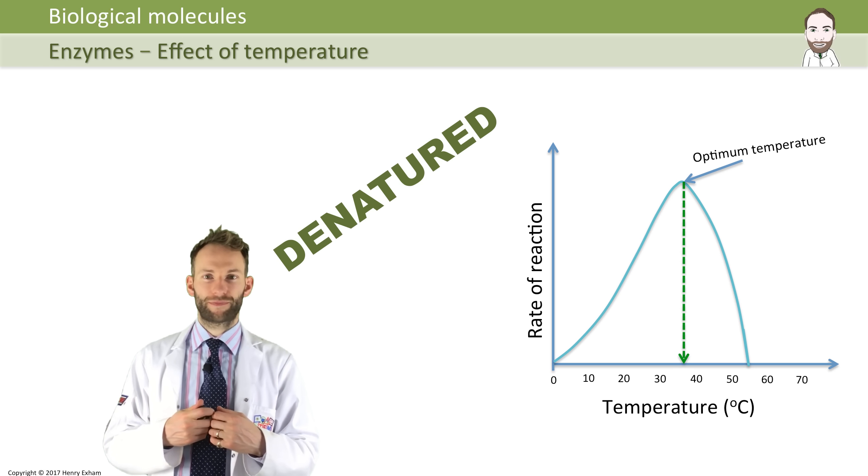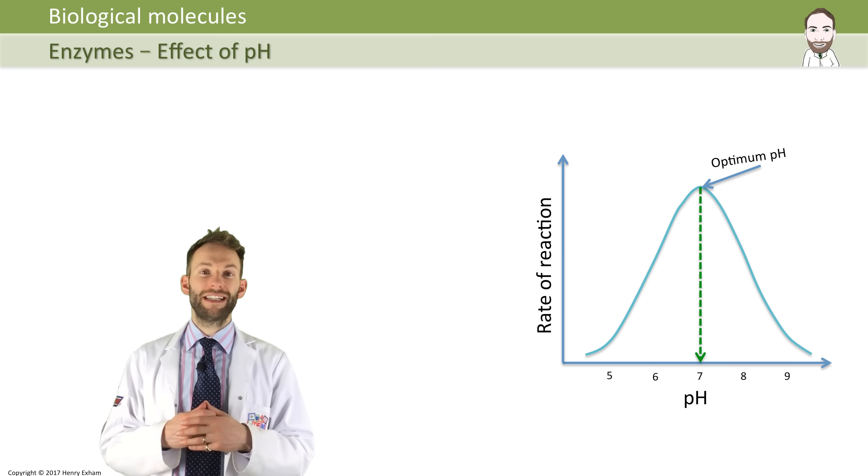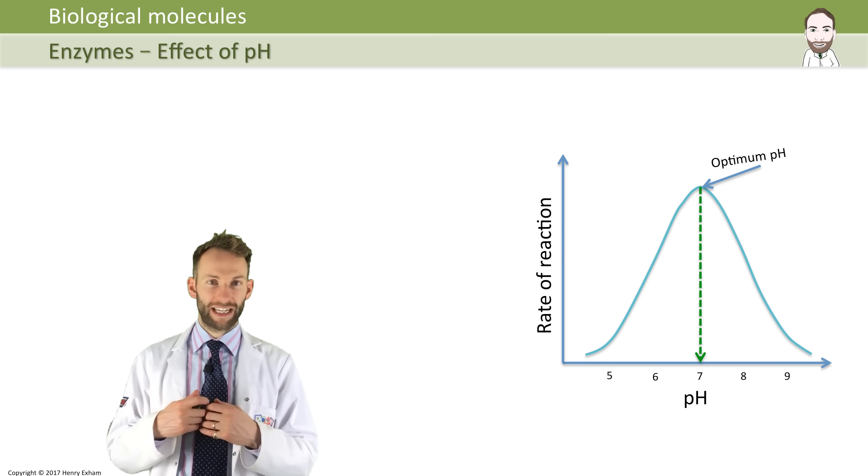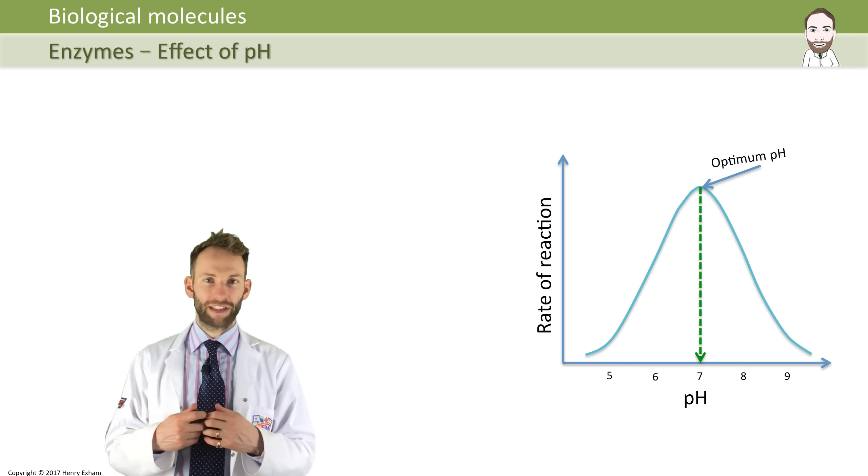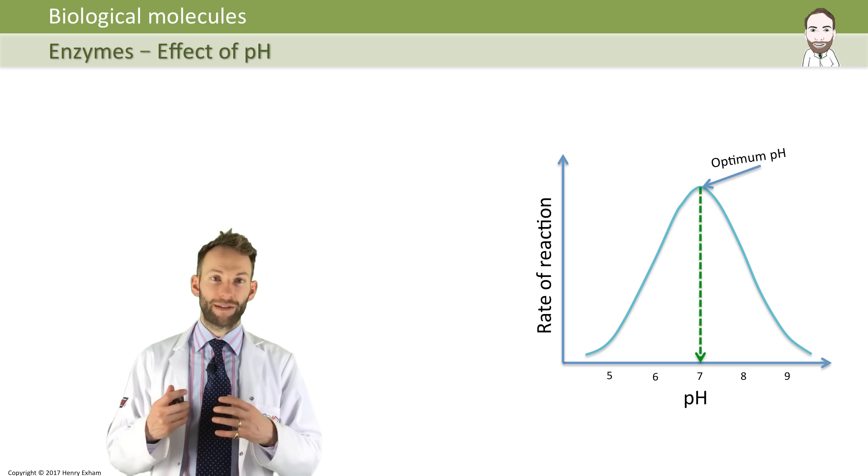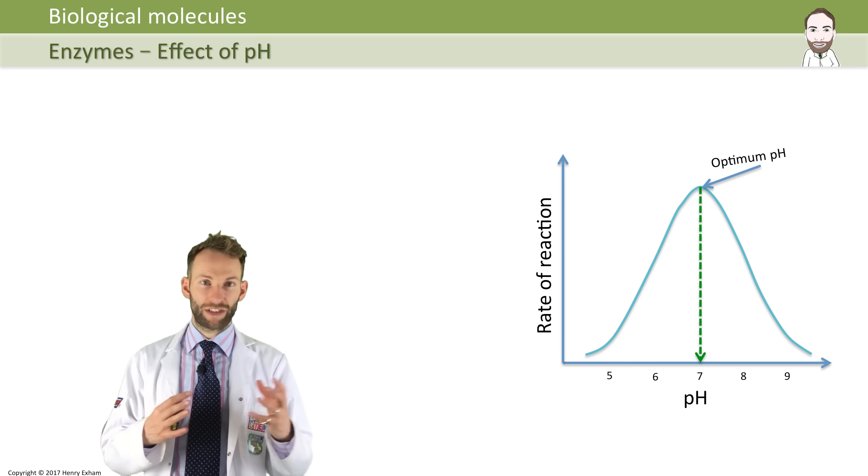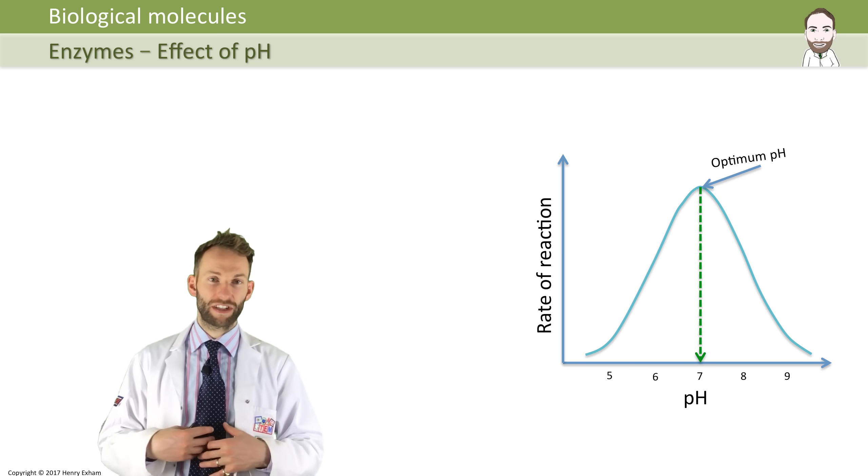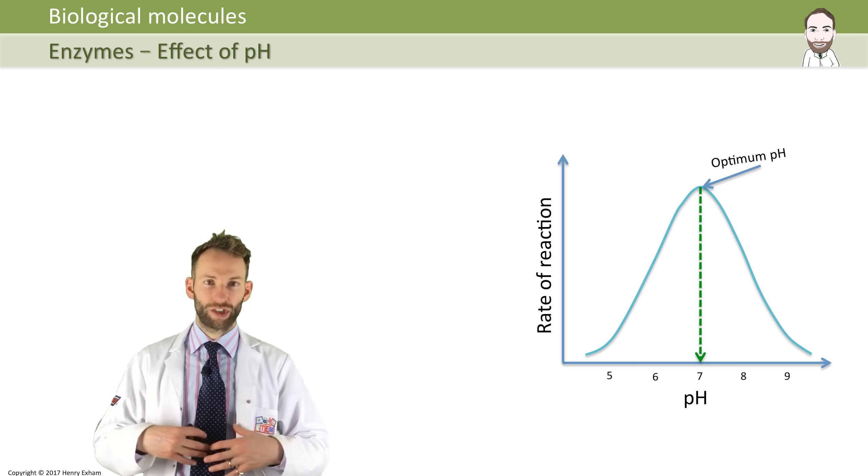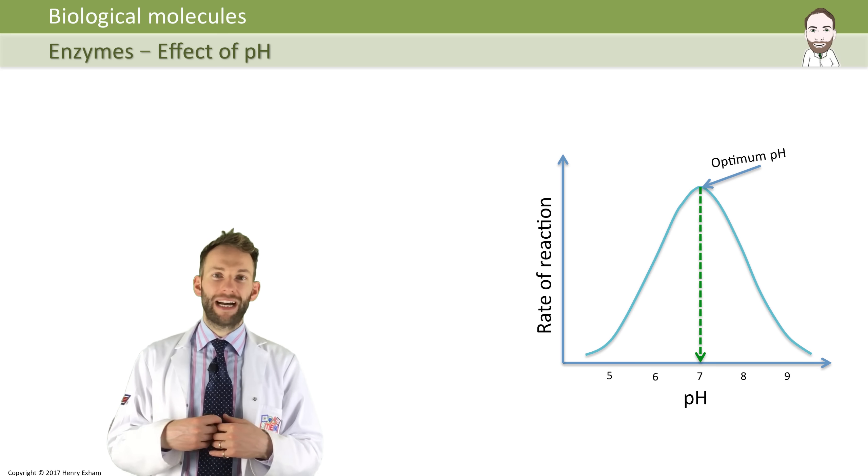The effect of pH is sort of similar. Again, there is an optimum pH at which most enzymes work - usually around pH 7. Some enzymes work really well at different pHs. For example, pepsin, which is an enzyme you have in your stomach, works really well in acidic conditions because that's what your stomach is.